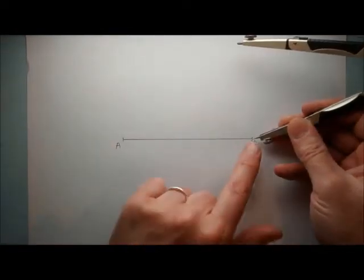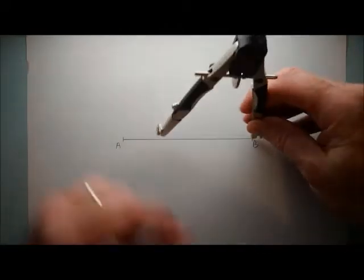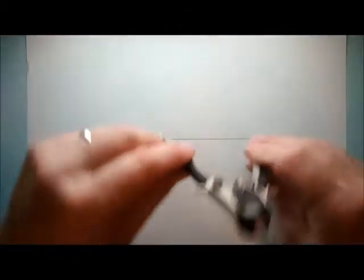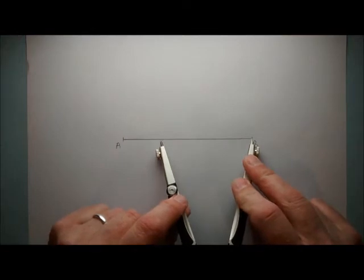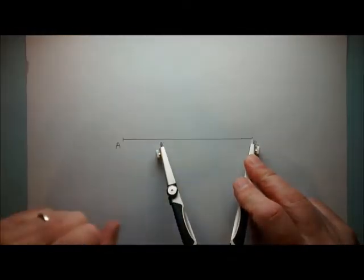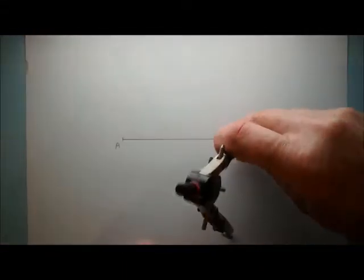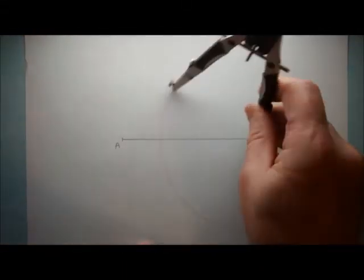we take our compasses and we put one end, the pointy end, onto point B and we open them up over halfway. It doesn't matter what the exact distance is but so long as that distance there is over the halfway mark of the line and then we're going to draw an arc above and below the line.